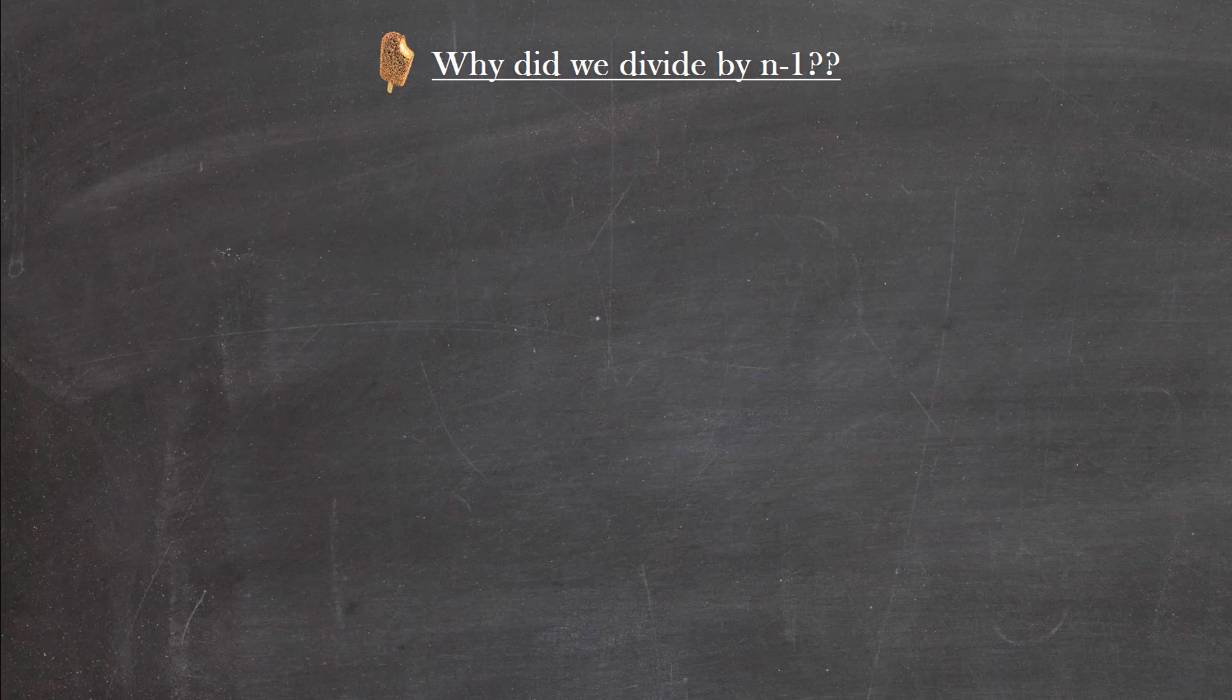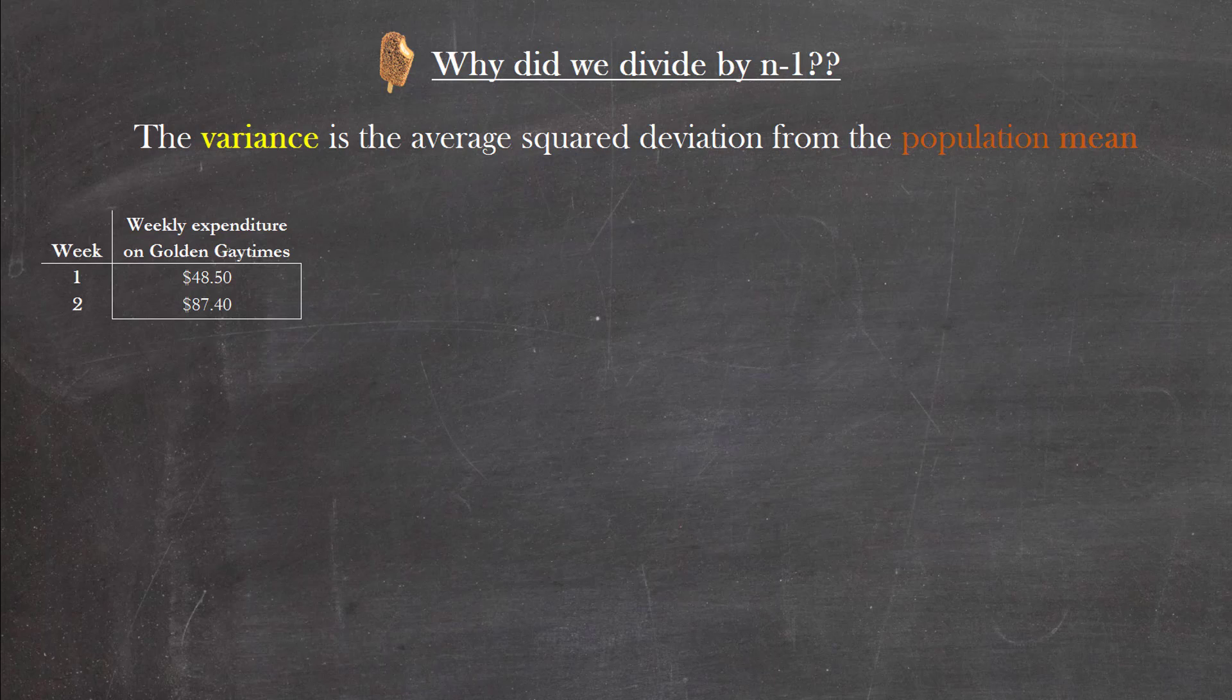Why do we divide by n minus 1? Well, this involves your ability to distinguish between what a population mean and a sample mean is. So the variance, technically, is the average squared deviation from the population mean. As an example, let's just take the very first two observations from our data set here: week 1 and week 2, where in week 1 I spent $48.50 on Golden Gay Times and week 2 I spent $87.40.